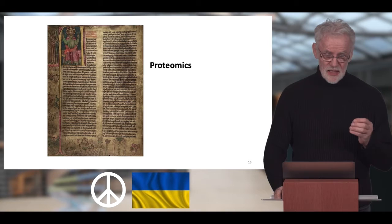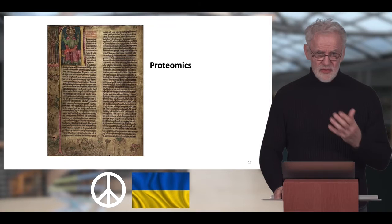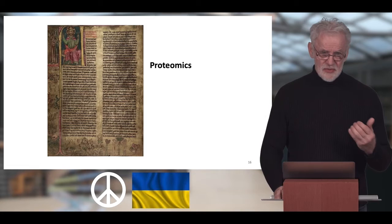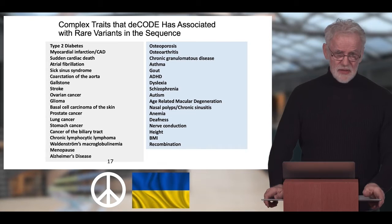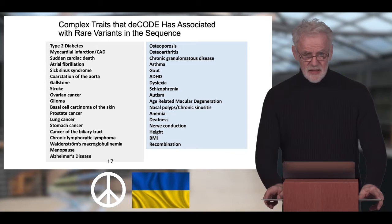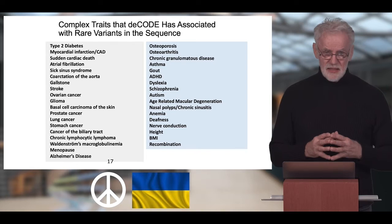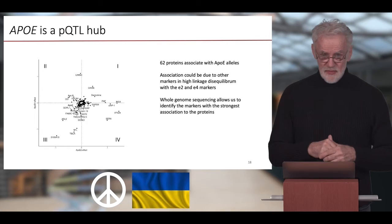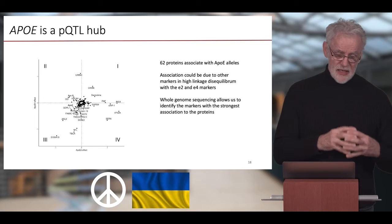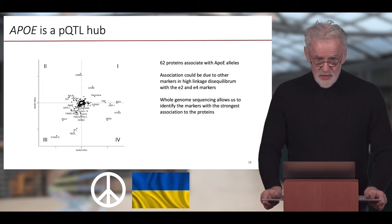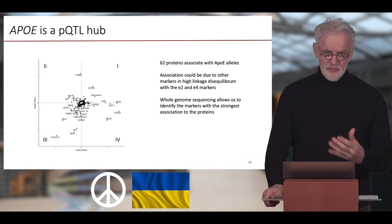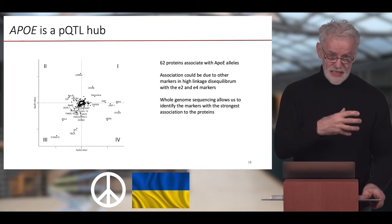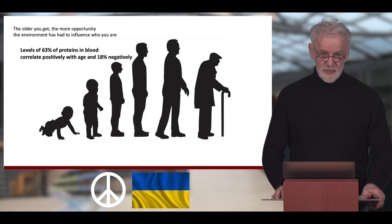When looking at proteomics, it is dangerous to make assumptions about how variants in the genome are mediating their effect. For example, when we find a rare coding sequence variant in a gene, we have a tendency to assume the effect is mediated through the protein made by that gene. One example I'm particularly fond of is how APOE affects the risk of Alzheimer's disease — the coding sequence variants in APOE affect the level of about 62 proteins. So it is very dangerous to assume that coding sequence variants in APOE affect Alzheimer's risk through APOE itself, and we have data indicating the effect is mediated through other proteins.